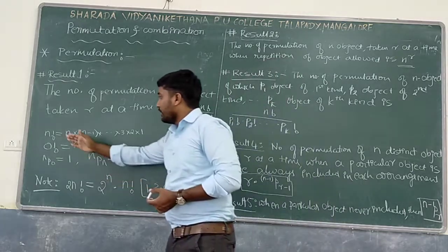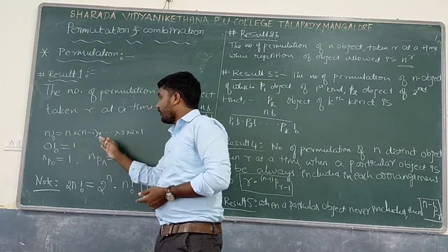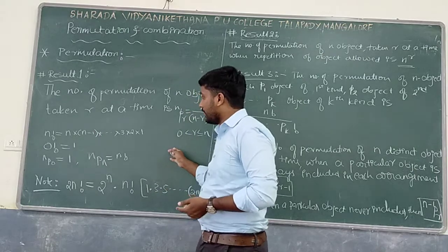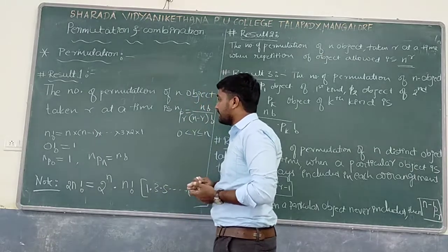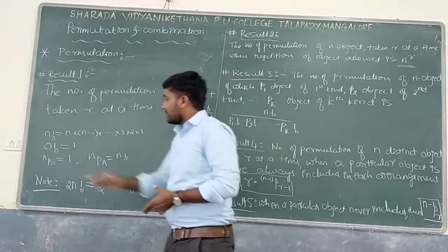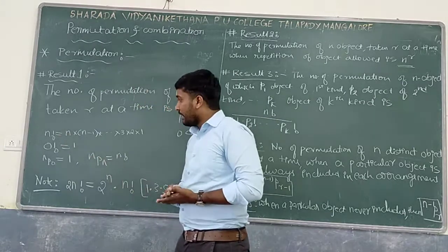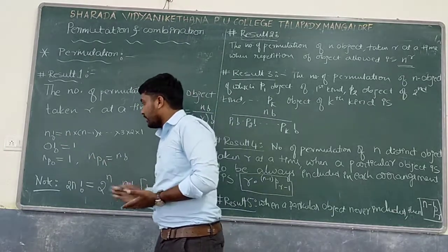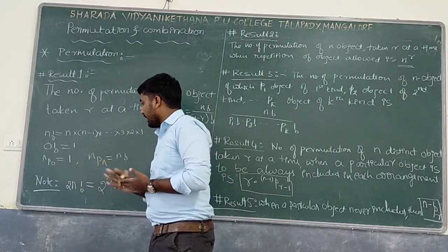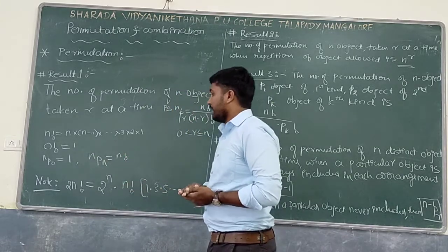The first point: n factorial is nothing but the product of first n natural numbers — n into (n minus 1) into ... into 3 into 2 into 1. Next, 0 factorial: its value is 1. nP0 = 1. And nPn = n factorial.